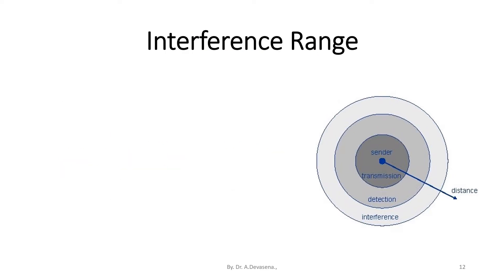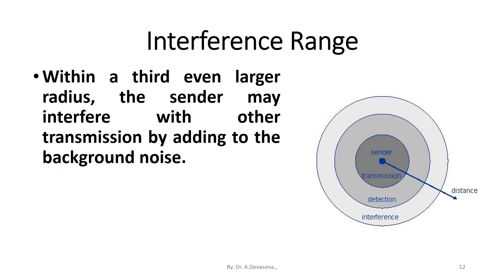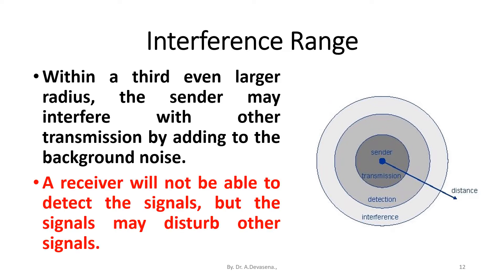Interference range: within a third, even larger radius, the center may interfere with other transmissions by adding to the background noise. A receiver will not be able to detect the signals, but the signals may disturb other signals.